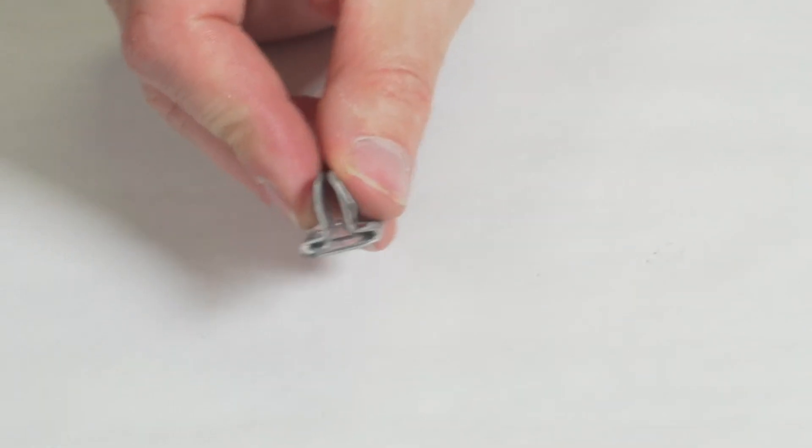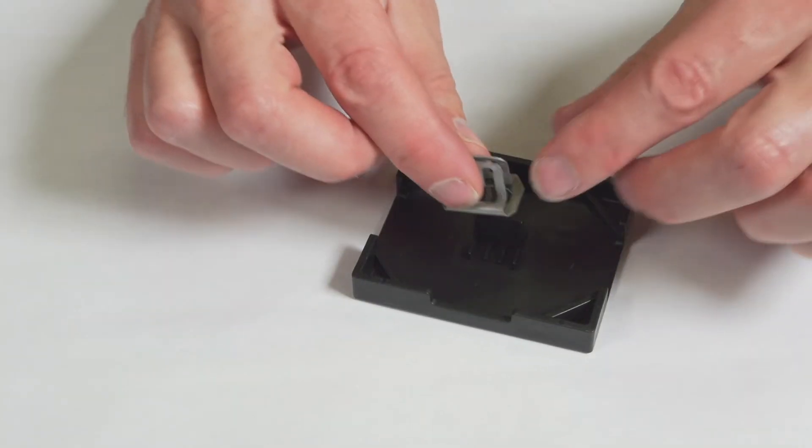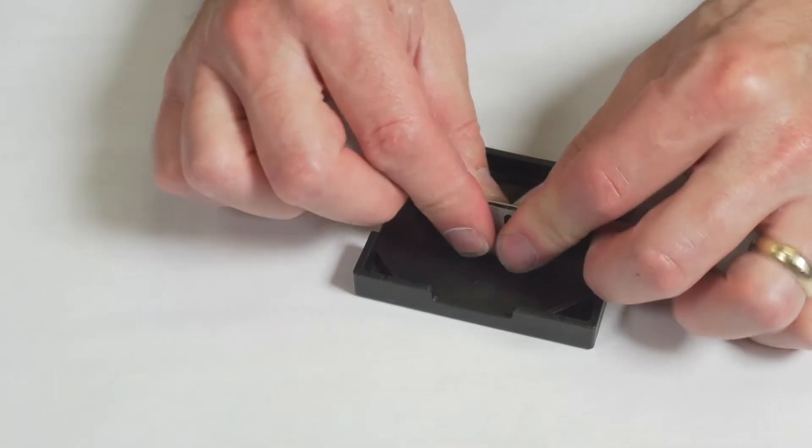These higher strength trim clips have an alternative barb construction that increases rib retention, but use the same basic assembly process.